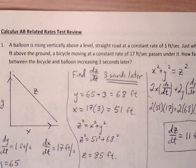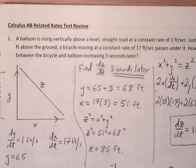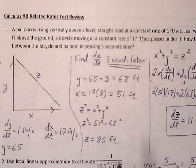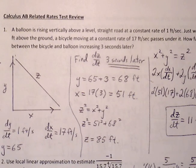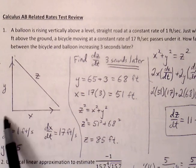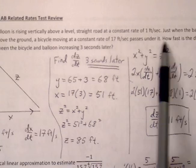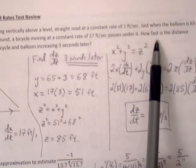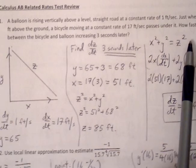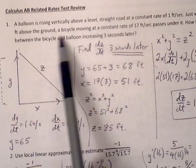Let's look at the chapter 2.6 related rates test review which also covers linear approximation and L'Hôpital's rule. Number one: a balloon is rising vertically above a level straight road at a constant rate of one foot per second. We have the balloon that's rising, just when the balloon is 65 feet above ground, a bicycle moving at a constant rate of 17 feet per second passes under it.